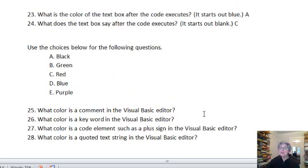Alright. What color is a comment in the Visual Basic Editor? Well, it is green, D. What color is a keyword? Blue, D. What color is a code element such as a plus sign? That's black. And what color is a quoted text string? Well, that's also black.